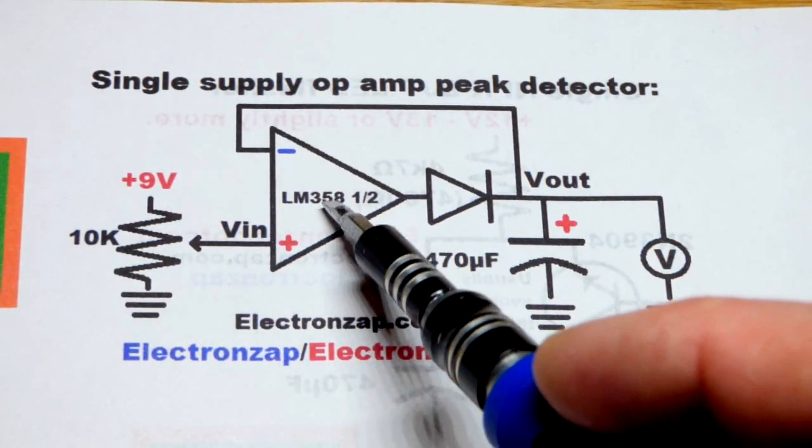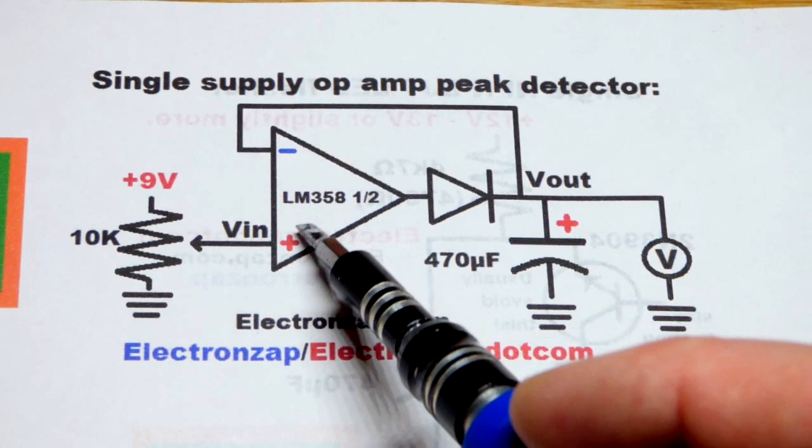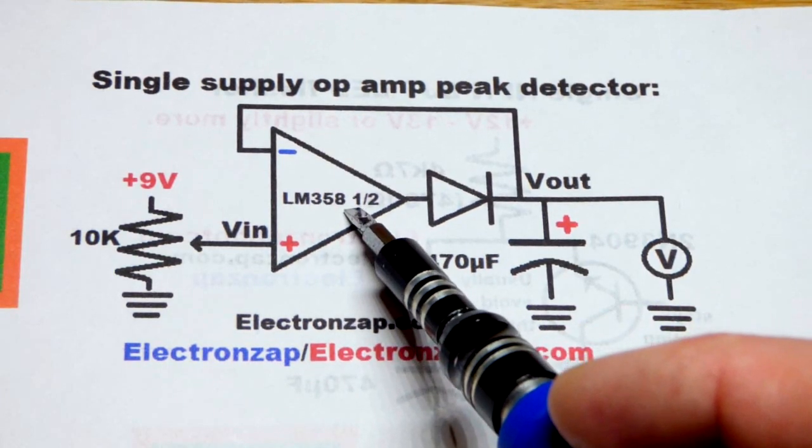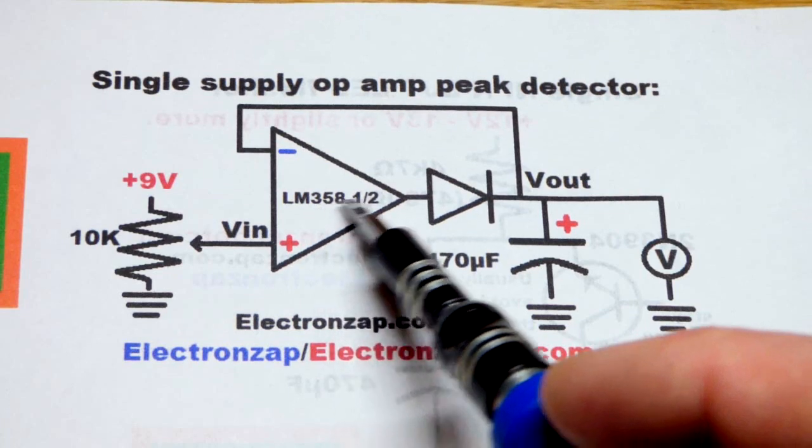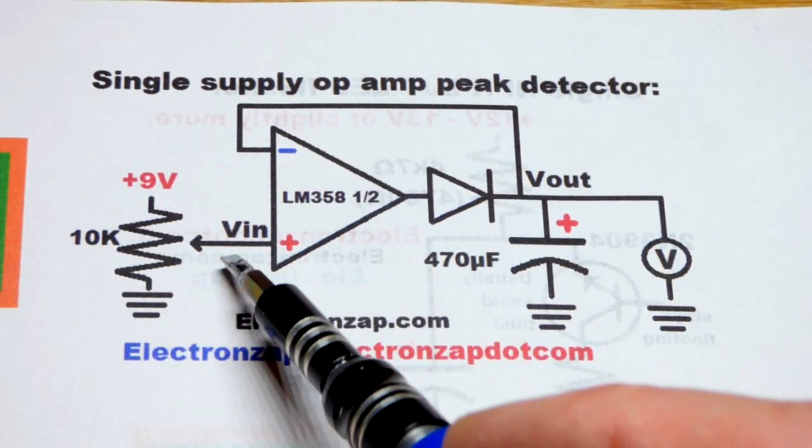The LM358 is a single supply op amp. It also works with dual or split supply. There's actually two op amps I should say, in the integrated circuit. We're just going to use one of them.